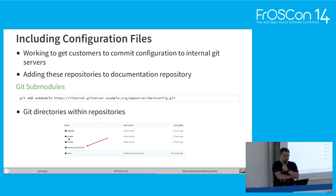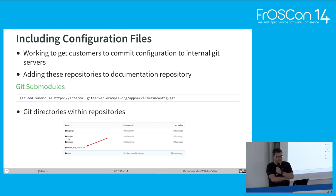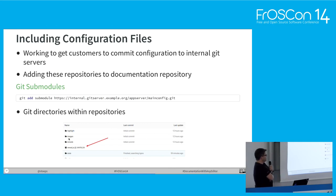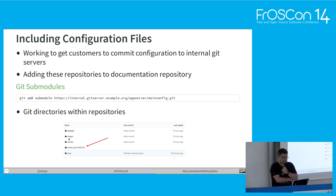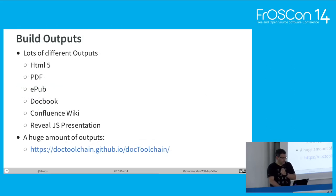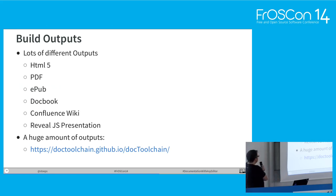Including configuration files: I normally replicate the configuration of my customers into Git. When you want to include a Git repository in another one, the easiest way is to add a submodule — you have one Git as the submodule and it will update. We will see that a little bit later when we look at the Docker file for AsciiDoctor which I use for creating the documentation.